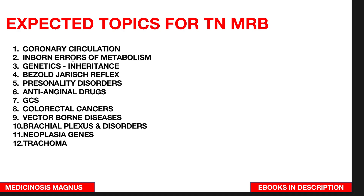Starting with the topics: coronary circulation; inborn errors of metabolism in biochemistry; genetics and its inheritance — you can learn these in pathology. In physiology, learn the visual-xyrus reflex. Also cover personality disorders, anti-anginal drugs, and the Glasgow Coma Scale.